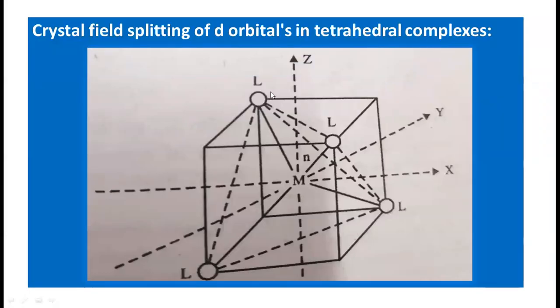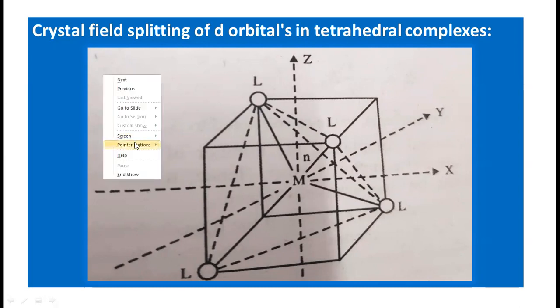In this lecture, we are going to discuss the crystal field splitting of d orbitals in tetrahedral complexes. In the previous lecture, we discussed the crystal field splitting of d orbitals in octahedral complexes. In octahedral complexes, the number of ligands is 6, whereas in tetrahedral complexes, the number of ligands is 4.